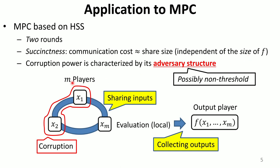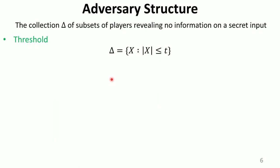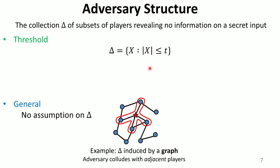Furthermore, the corruption power of the adversary is characterized by the adversary structure of the underlying homomorphic secret sharing scheme. The adversary structure is the collection of subsets of shares which reveal no information on a secret. Therefore, if we construct a homomorphic secret sharing scheme for a non-threshold adversary structure, then we can obtain an MPC protocol which tolerates a more general corruption pattern. In this work, we focus on three kinds of adversary structures. The simplest case is a threshold adversary structure, which tolerates any collusion of at most T players. On the other hand, the most general case is a general adversary structure, which has no limitation on delta, so every adversary structure is classified as a general adversary structure.